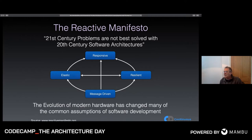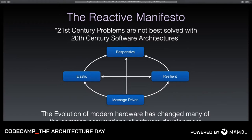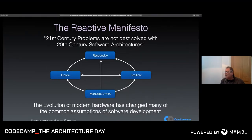The tagline for the Reactive Manifesto: '21st century problems are not best solved with 20th century software architectures.' If we're looking for reactive systems, we want them to be responsive — delivering responses at a predictable, effective rate — resilient under stress, and elastic as demand goes up or down. One of the underpinning ideas is that they need to be message-driven, which enables all the other principles.